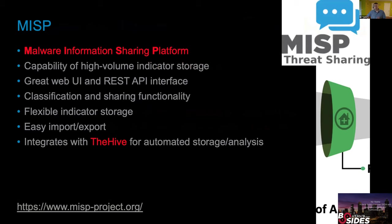MISP, another open source solution, stands for Malware Information Sharing Platform, but it's much more — it's a full open source threat intelligence platform. The idea is to get feeds from the community with indicators of compromise: malicious IPs, URLs, hash values, and then cross-correlate them with indicators coming from your SIEM. If there's a match, that alert gets priority for your security analyst.